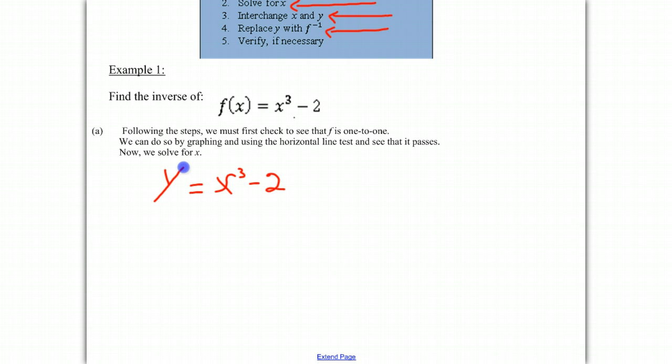And if you remember, step one was to first verify that it's one-to-one. We're going to assume it's one-to-one. But what you should be doing is graphing the function and using the horizontal line test to see that it passes. If you use the horizontal line test and it is a one-to-one function, then you know you can find an inverse. So we're assuming that's true, and let's move on.